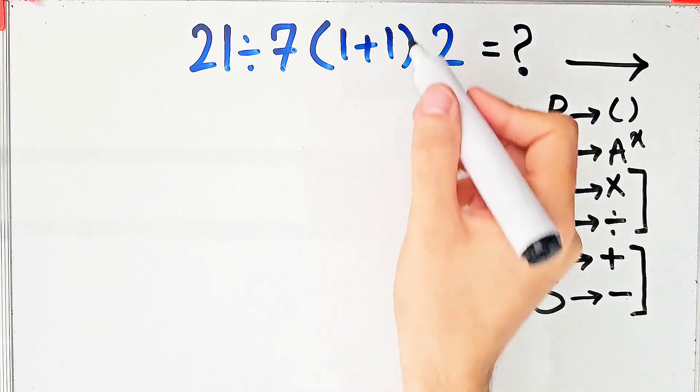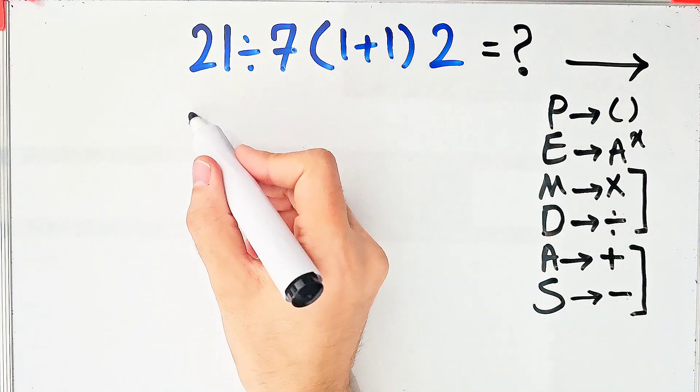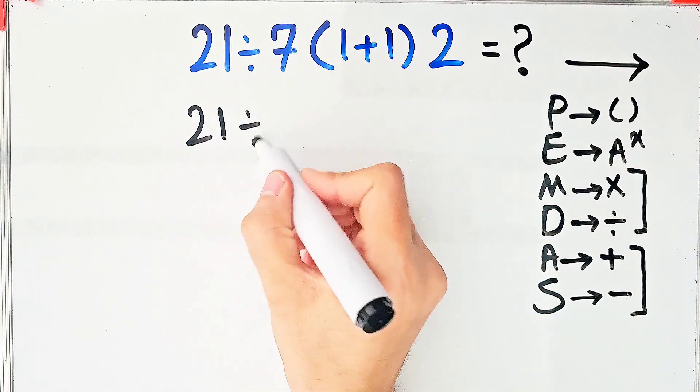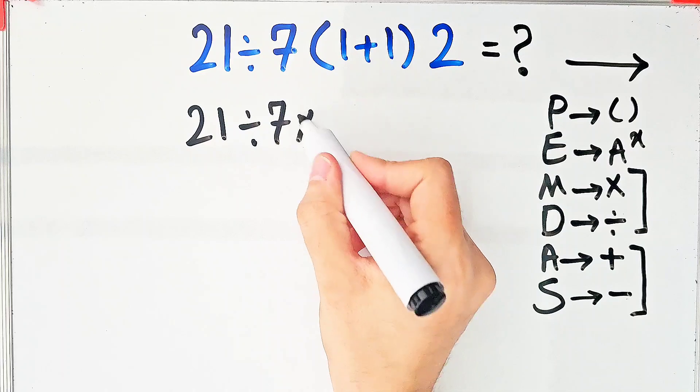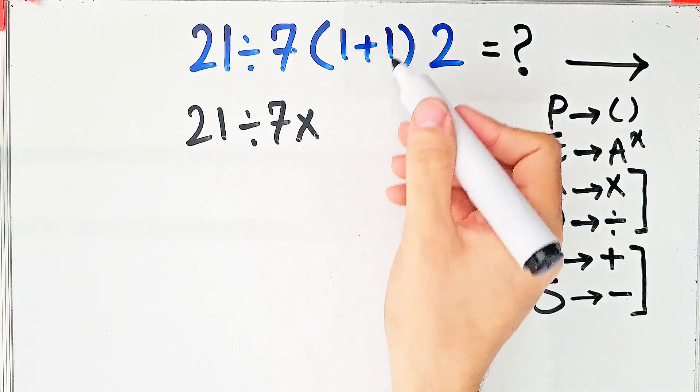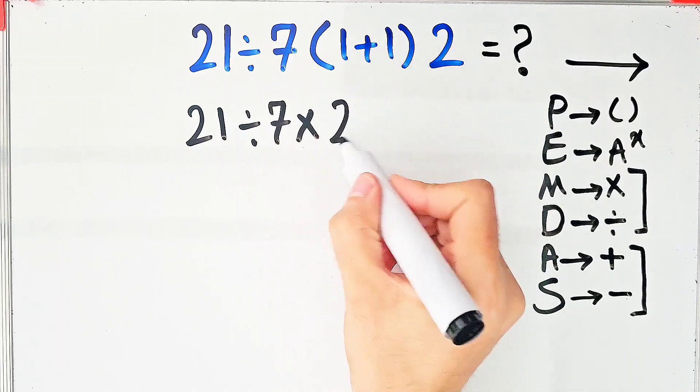First, we simplify these parentheses. We have 21 divided by 7, then times 2, then times 2.